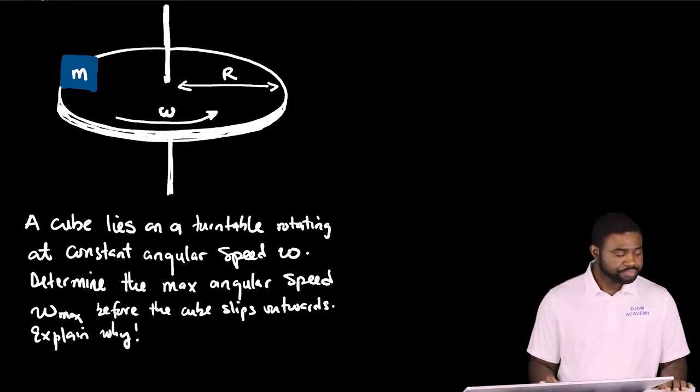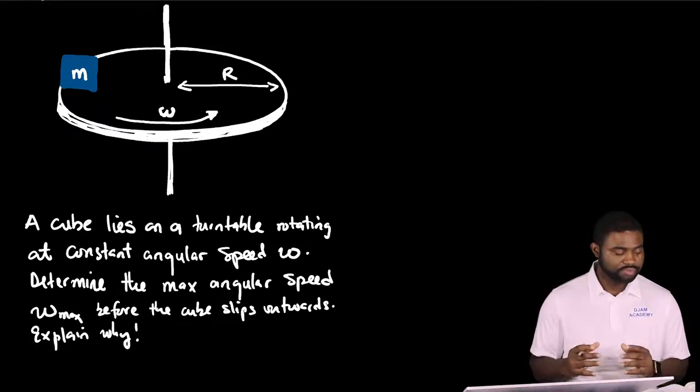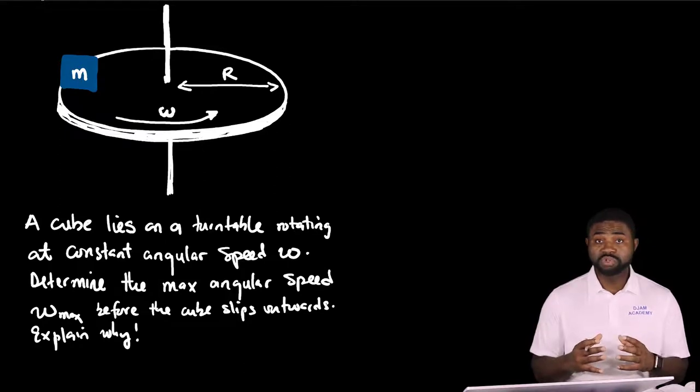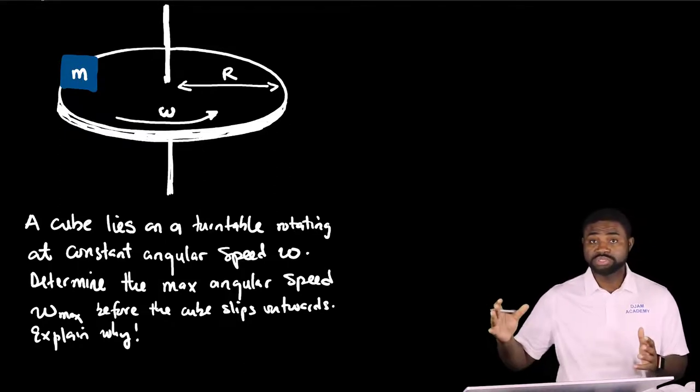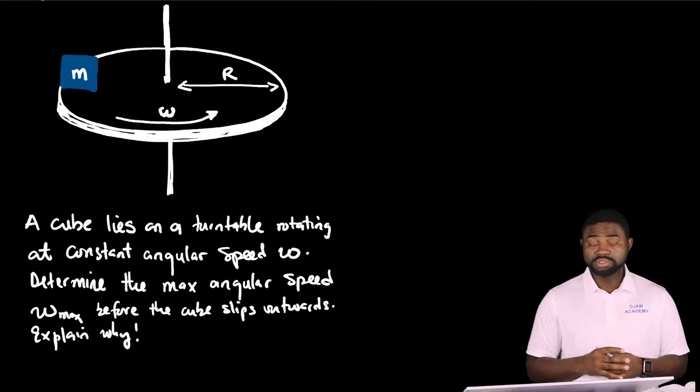In other words, if the angular speed of the turntable is slowly increased, at some instance, the cube will actually fly outwards in a straight line. So the question is, why is that the case?